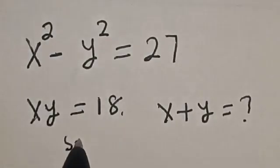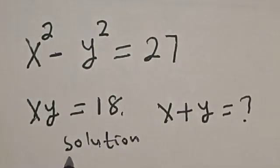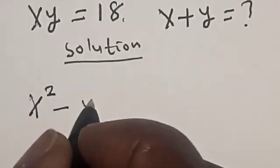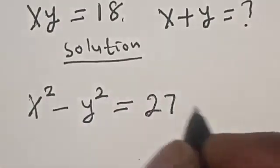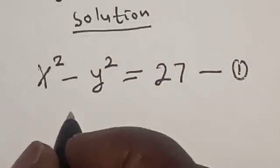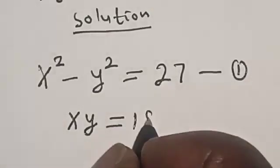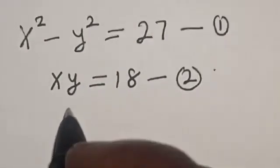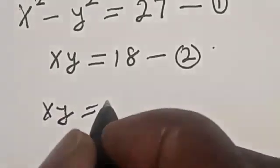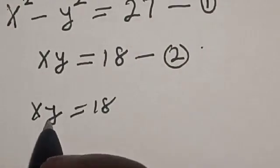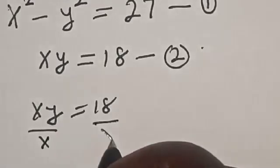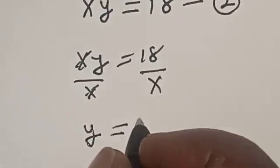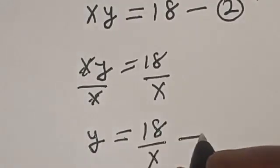Solution. We have the given equation: x squared minus y squared is equal to 27. Let's call this equation 1. Then we have xy is equal to 18. Let's call this equation 2. From equation 2, let's make y the subject of the formula. Dividing both sides by x, y is equal to 18 divided by x. Let's call this equation 3.